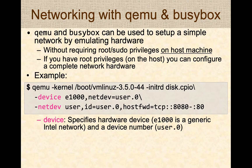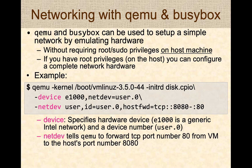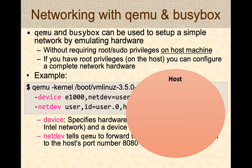You have two options. One is the device option, which specifies the hardware device to virtualize — in this case E1000, a generic gigabit network device, associated with user zero. The second is NetDev, which tells QEMU to forward TCP port 80 from the virtual machine to the host port 8080. So if you run a web server on your virtual machine at port 80, the traffic will flow onto port 8080 on your physical machine and then onto the internet.